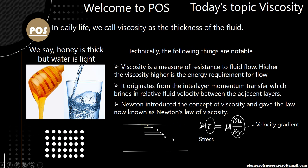We know that the velocity is maximum at the center of the pipe whereas the velocity is zero on the wall. As we move from the center to the wall, we get a change of velocity — it gradually reduces and ultimately becomes zero on the wall. So a gradient exists here and that particular gradient is the velocity gradient.